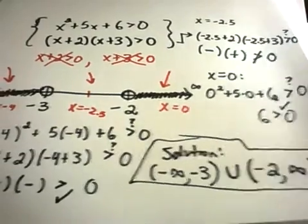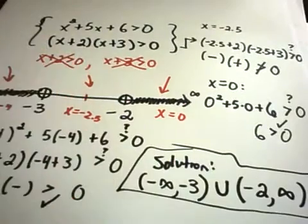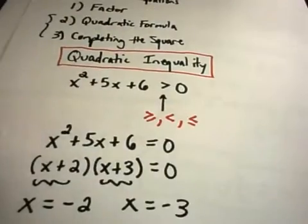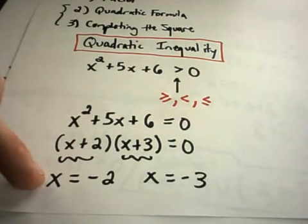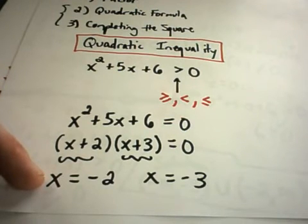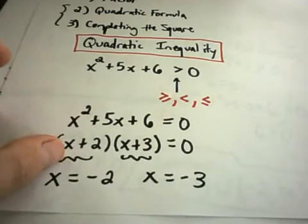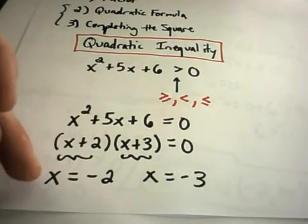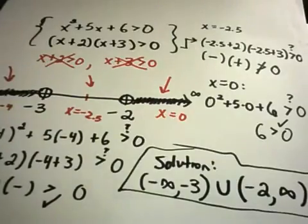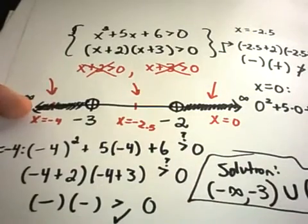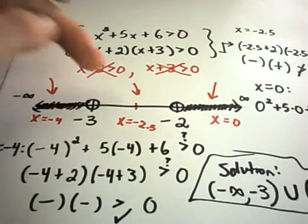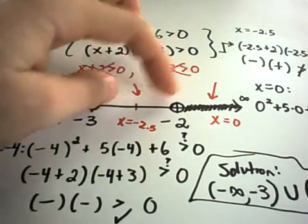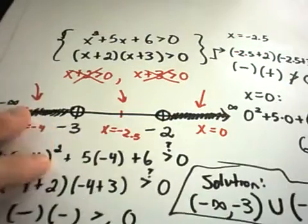That's the procedure to solve a quadratic inequality. Solving the corresponding quadratic equation can sometimes be tedious — you may need to complete the square or use the quadratic formula. But once you have those solutions, put them on a number line, test those values in your original inequality, then take a number from each interval, plug those into your inequality, and see if they work or not.